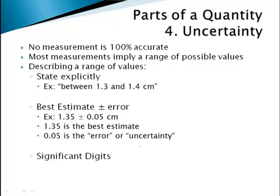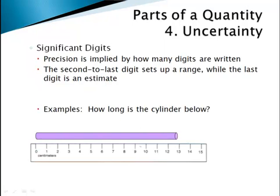The final way of describing a range of values is to use significant digits. Significant digits is the tool that our book uses. When using significant digits, the precision of your measurement is implied by how many digits were given to you. Specifically, the second-to-last digit sets up the range, and the last digit is our best guess — an estimate. Let's look at a couple of specific examples.